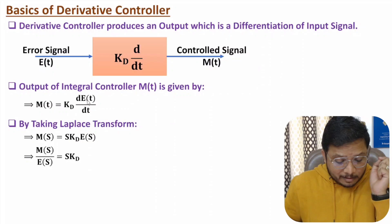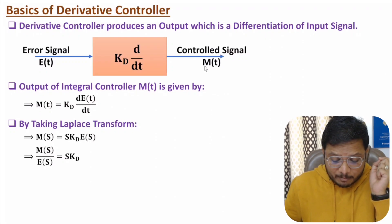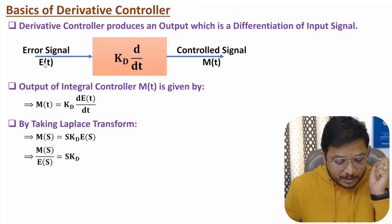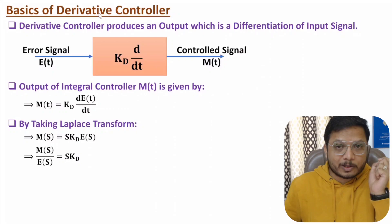To get the transfer function of the derivative controller, we take the ratio of output to input. Output M(s) divided by input E(s) equals s × Kd. So the transfer function of the derivative controller is Kd·s.